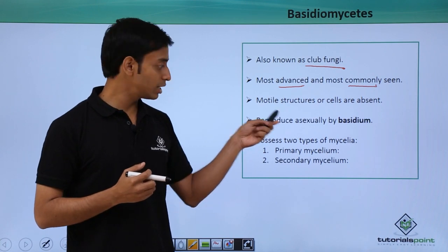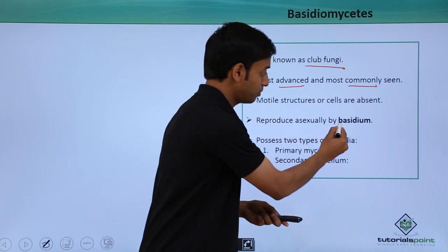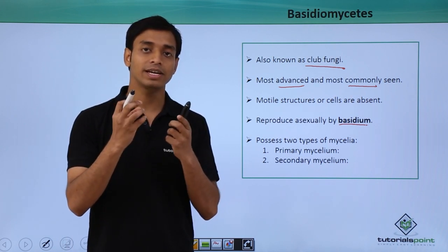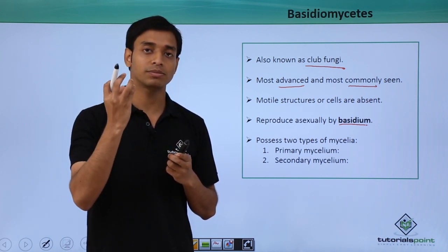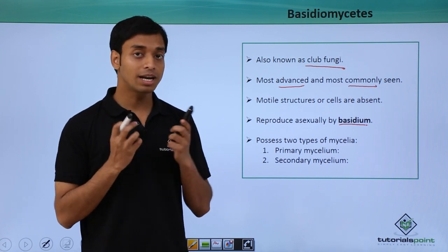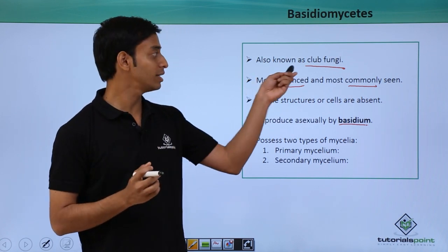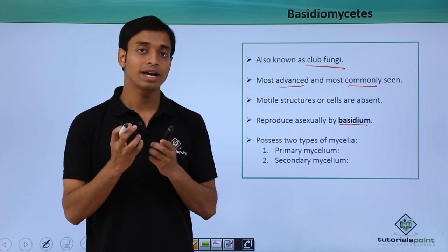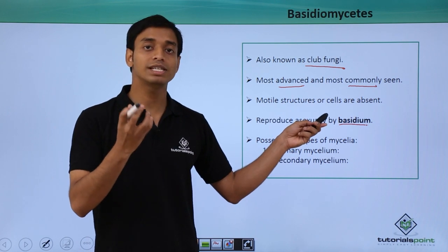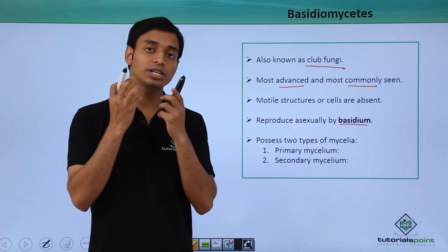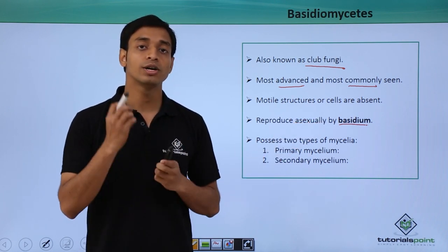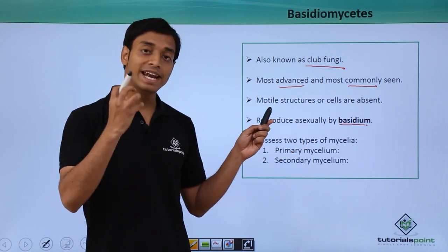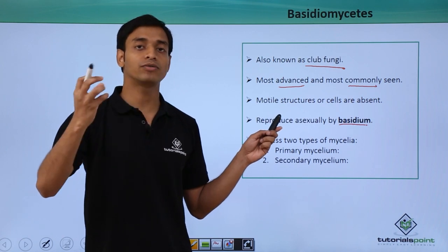They can reproduce asexually by basidium. What is basidium? Sometimes the tip of the hyphae becomes enlarged and club-shaped, which is why we call them club fungi. These form basidium, and from each basidium, it produces four basidiospores. These are enlarged cells formed at the tip of the hyphae.